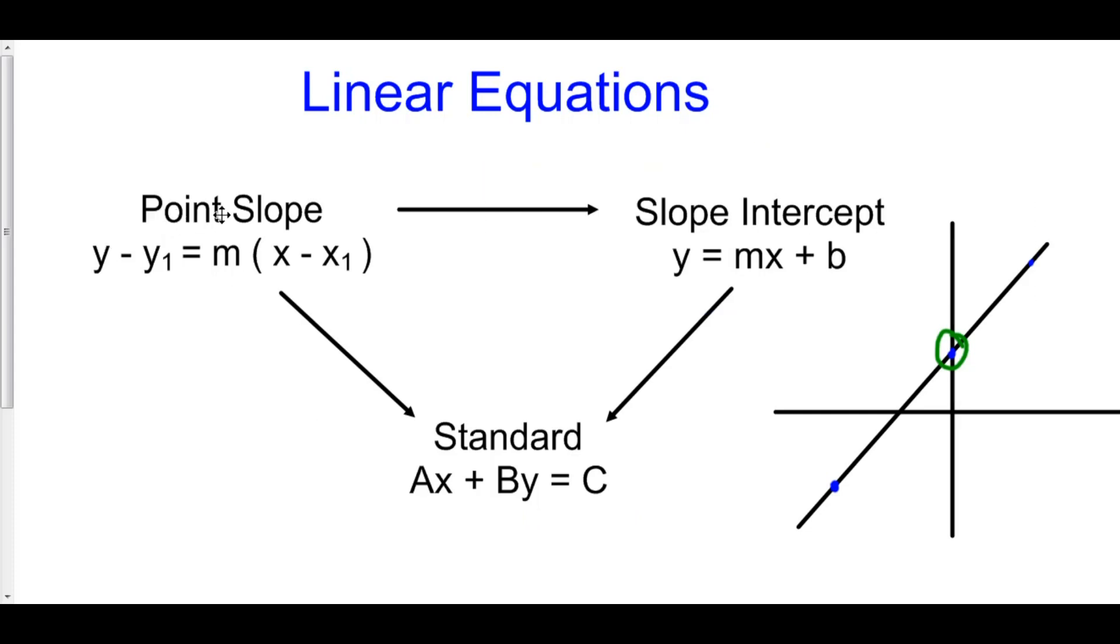Now, you can go from point slope form to slope intercept form by distributing m and moving over your y-one. And then you can go from slope intercept form to standard form by moving over the m-x and changing m to be an integer if you have to, or a positive integer in fact, if you absolutely have to. And that is the basics of lines. These are the three lines that we have. We will be using point slope form all the time.